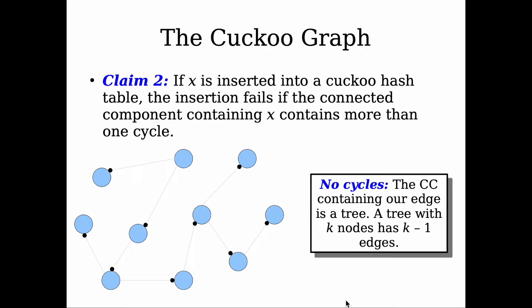Let's start with the first case. The first case is when we have no cycles in the connected component, so after adding a new edge, there's still no cycle. So the structure is actually a tree. If there's no cycle, since it's a tree, it is composed of k elements with k minus one edges.